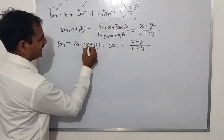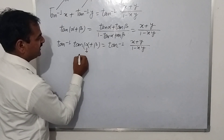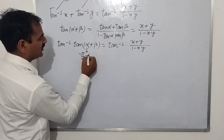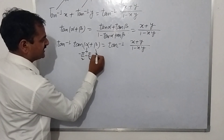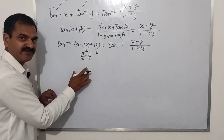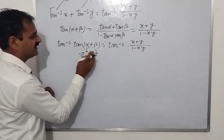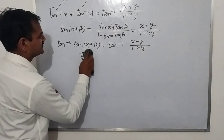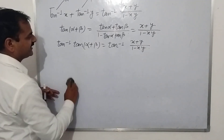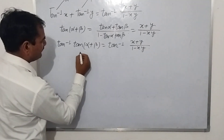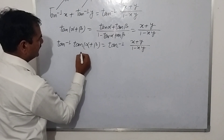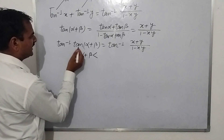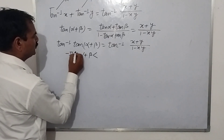The range of tan inverse is minus π/2 to π/2. Since α = tan⁻¹ x, its range is minus π/2 to π/2, and similarly β = tan⁻¹ y also lies in minus π/2 to π/2. If I add both, then α+β can range from minus π/2 minus π/2 to π/2 plus π/2, i.e., from minus π to π.